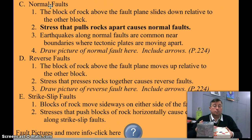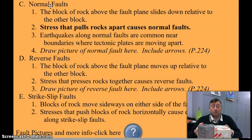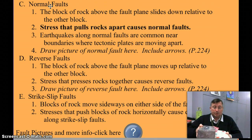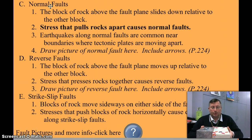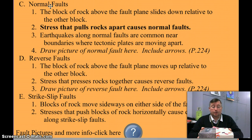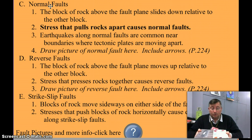Reverse faults are found near boundaries where the plates are pushing together, so there's a lot of stress pushing them together, and it just slides up. And then strike-slip faults — the stress is back and forth, and so one or both of the blocks of rock slide forward or slide back along a horizontal plane.